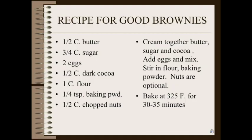For example, one time she forgot the sugar — more than once — and so they were like bitter chocolate biscuits. Not very good. Another time she put in way too much butter, so what we had was chocolate sludge. Tasted good, but you had to eat it with a spoon and it never did bake. There were times when she didn't put in enough flour or she put in too much flour. We just never knew from one time to the next what we were going to get.